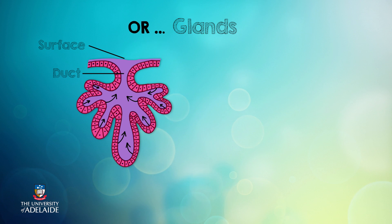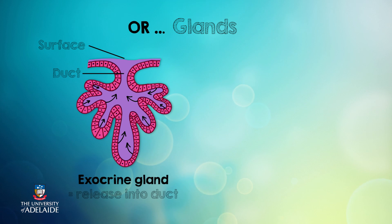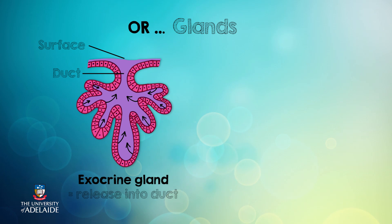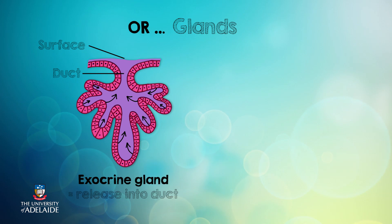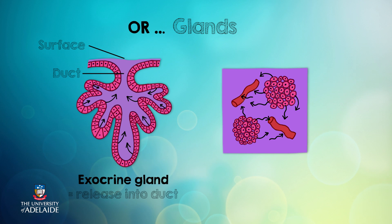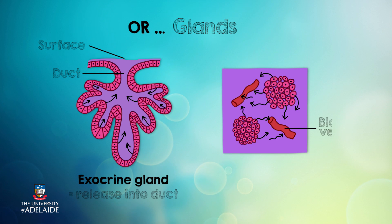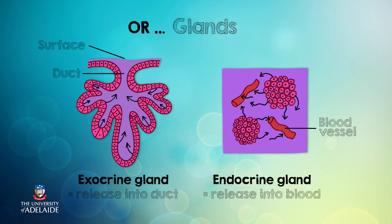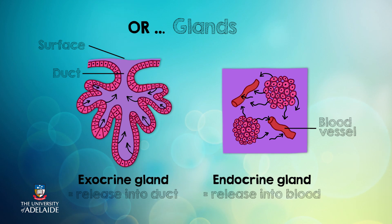We call these glands exocrine glands, and common examples include our sweat glands and our salivary glands. Secretions can also be released into surrounding tissue and blood — we call these glands endocrine glands, and an example of an endocrine gland is the thyroid gland.